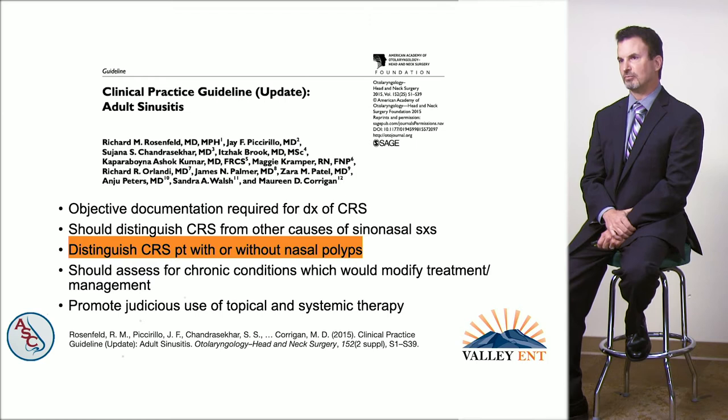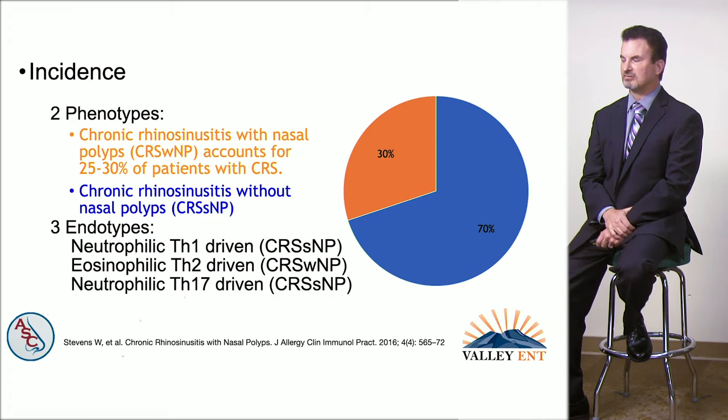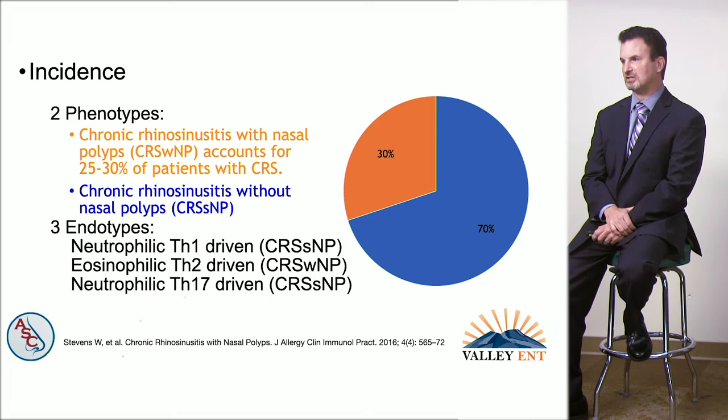The third highlighted issue from the guidelines was to distinguish chronic rhinosinusitis patients with polyps from those without. About a third to a quarter of patients with chronic rhinosinusitis have polyps. This is a phenotypic distinction, and we need to contrast it with endotyping, which looks at the pathophysiology of the disease.